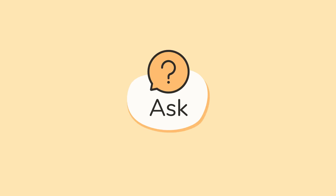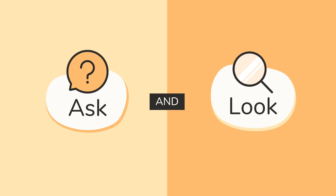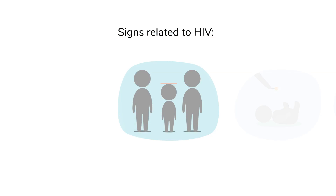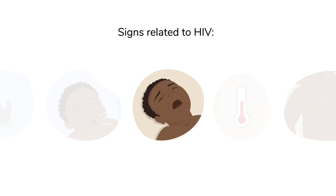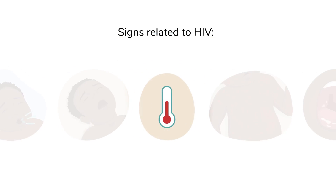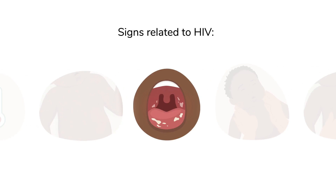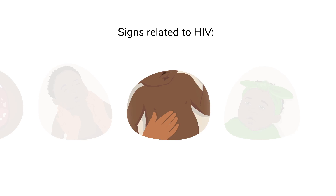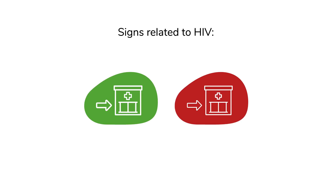Once you have asked the caregiver questions about the child's symptoms, look at the child's signs. Start by looking for signs related to HIV, such as growth delay or stunting, delays in development, a cough, difficulty breathing, a fever, a skin rash, oral thrush (white patches in the mouth), enlarged lymph nodes, an enlarged spleen or liver, and dehydration. If the child has any signs that may be related to HIV, refer them to a health facility.